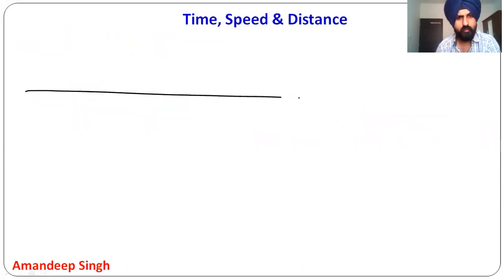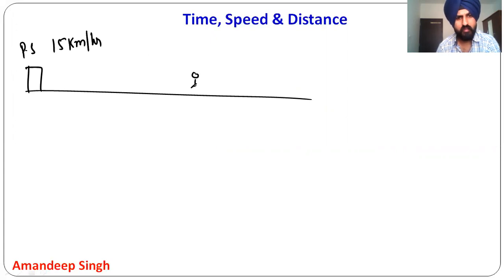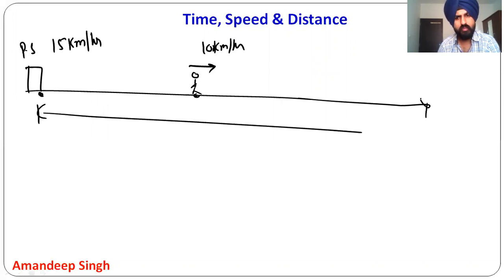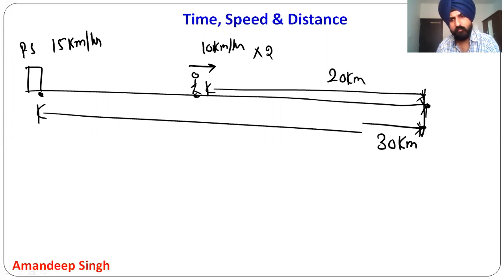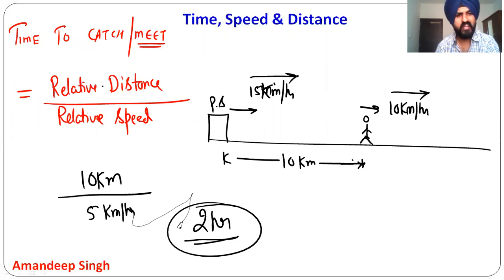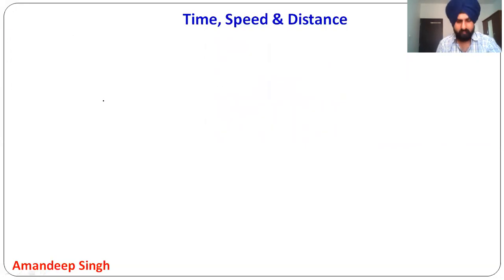Let's cross-check. The police travel at 15 km/h for 2 hours = 30 km. The thief travels at 10 km/h for 2 hours = 20 km, but had a 10 km head start, so is also at the 30 km mark. They meet — confirmed. So the formula is: time to catch = relative distance divided by relative speed. Both people cover the gap at relative speed, not individual speed.